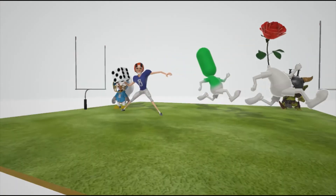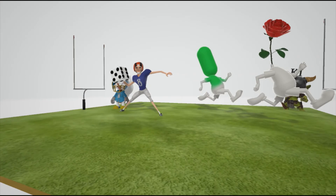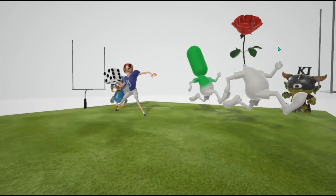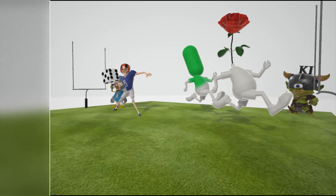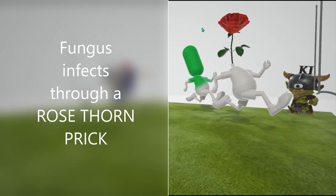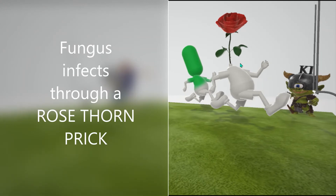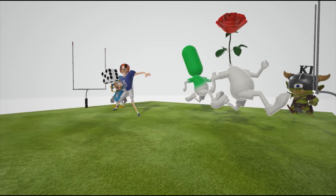This is an interesting football game with some interesting players to help us remember associations of Sporothrix schenkii. Sporothrix schenkii lives on vegetation — these fungi can be found on living plant tissue, and the organism is introduced into the host tissue through a rose thorn prick. Sporothrix schenkii causes rose gardener's disease.